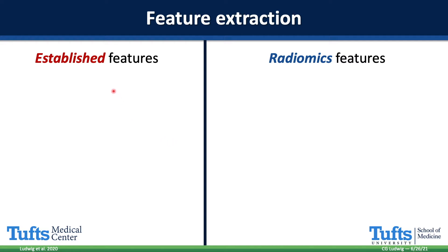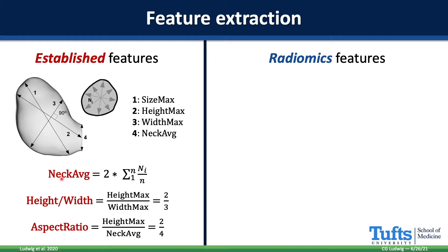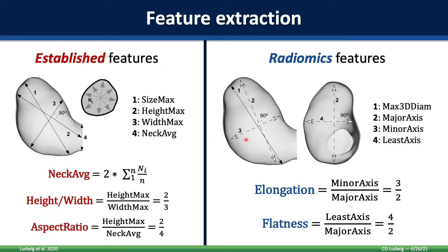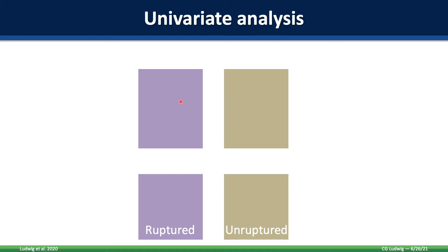Let me give you some highlights of the established and radiomics features. Starting with established features: the neck average describes how big the neck of the aneurysm is coming off the parent vessel; the height-width ratio captures how long and skinny the aneurysm is; and the aspect ratio compares the volume of the body of the aneurysm to the neck through which blood travels. For radiomics, I'm highlighting elongation — similar but not quite the same as height-width ratio, capturing how long and skinny like a snake the aneurysm is — and flatness, which gets at how flat, like a disc or a pancake, the shape is.